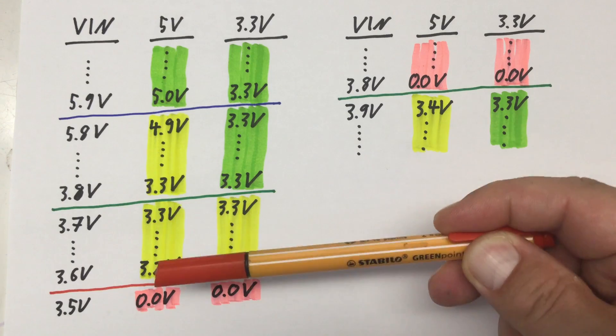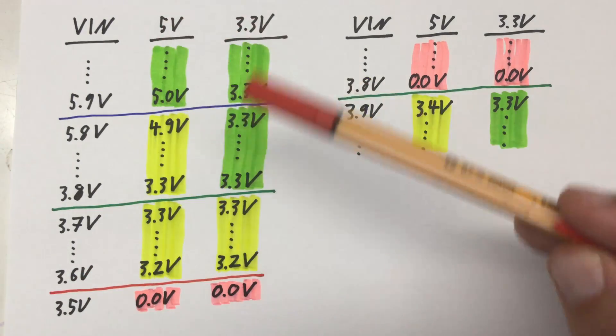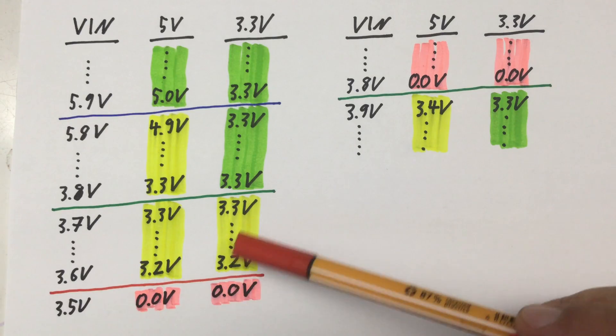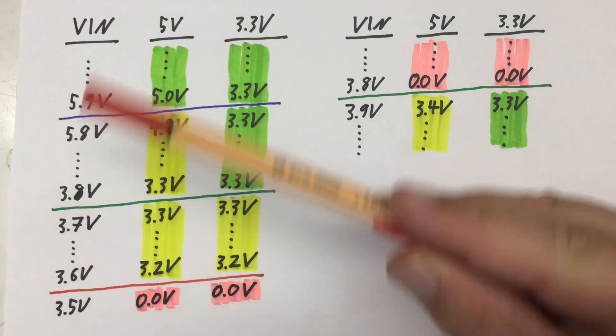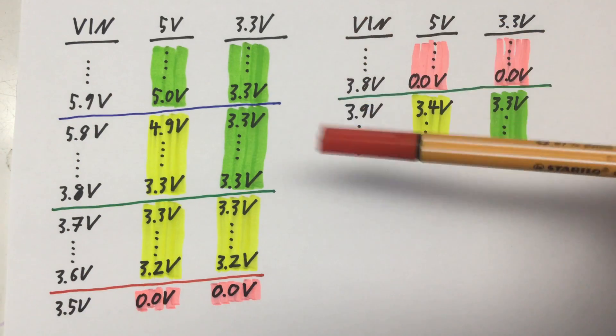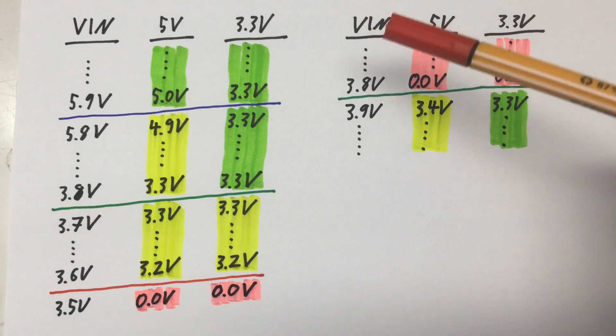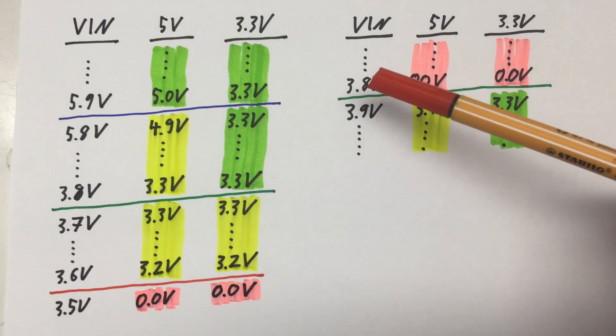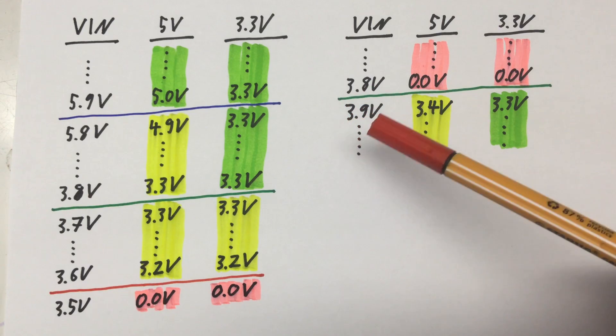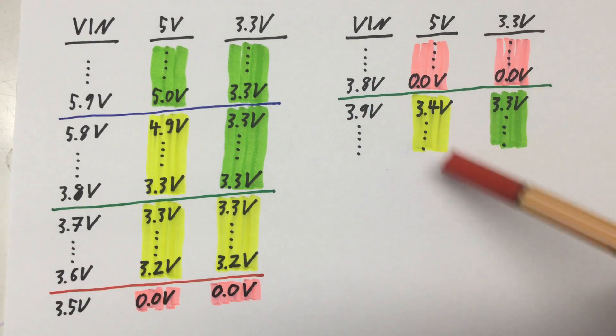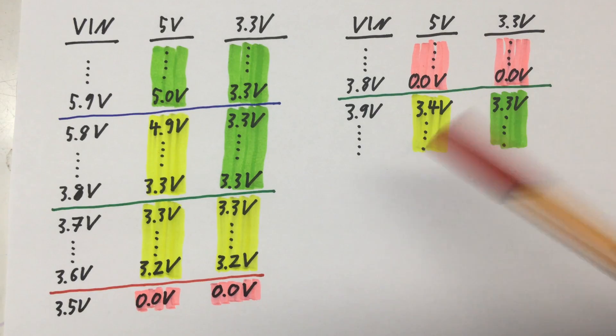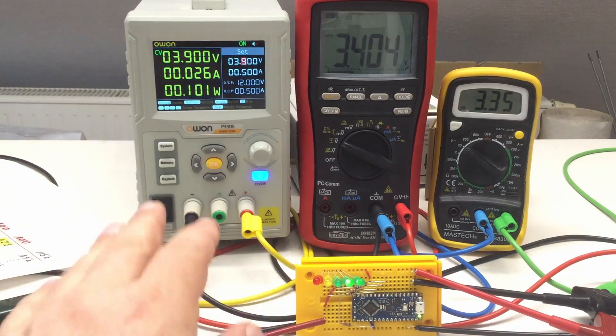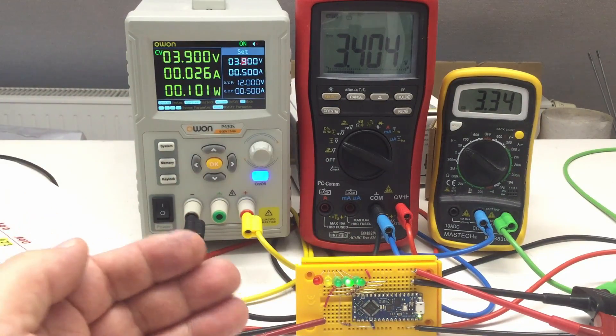And that continues down to 3.6 volts where both the 5 volt rail and the 3 volt rail are at about 3.2 volts. If we go further down to 3.5 volts V-in, we're dead. Booting up again, that is increasing the voltage again, we can increase from the 3.5 volts up to 3.8 volts and nothing happens. Only when we cross the threshold here to 3.9 volts, the rails come up again. 5 volts, of course not at 5 volts but 3.4 volts, and 3.3 volts happy at 3.3 volts, and everything is blinking and nice.